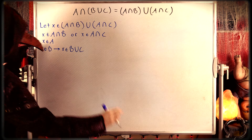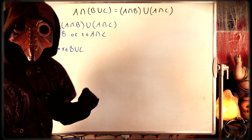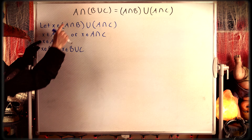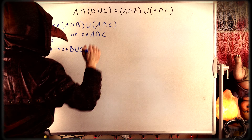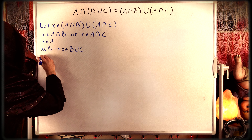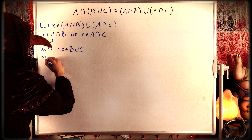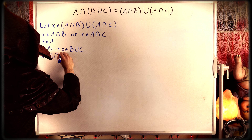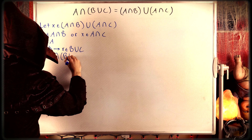So if x is in A intersect B, that means x is in A and x is in B union C. Thus by definition of set intersection, we have our desired result: x is an element of A intersect B union C.